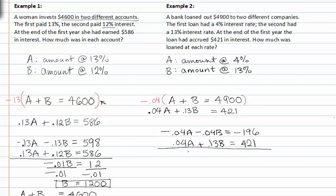Adding together, my A terms add to zero. My B terms end up being positive 0.09B equals 225. Dividing both sides by 0.09, B is equal to 2,500 dollars.